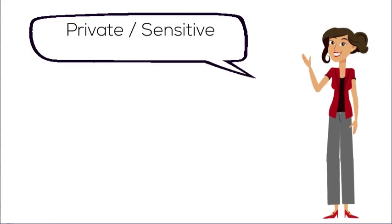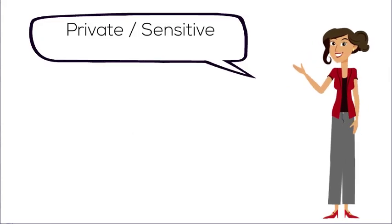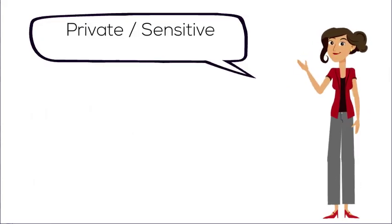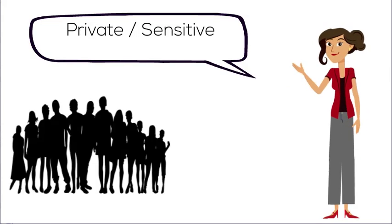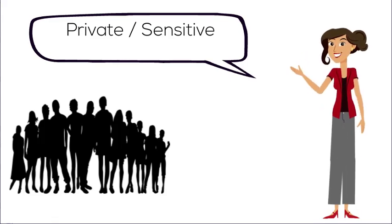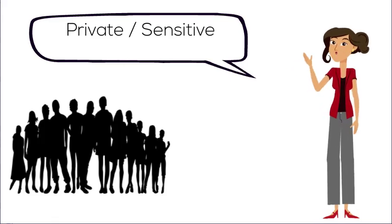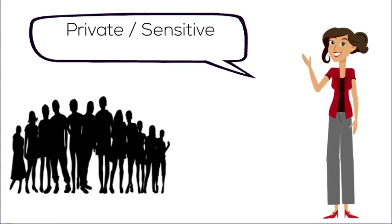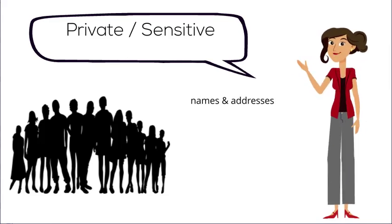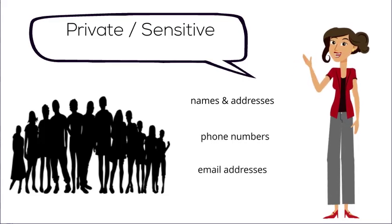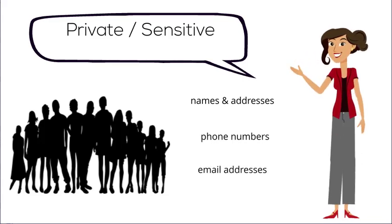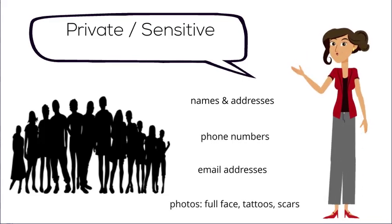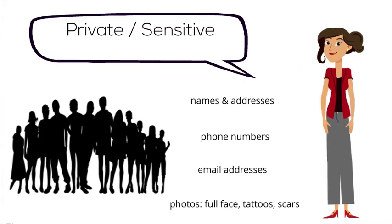What do we mean by private and/or sensitive data? Research involving humans is especially likely to involve collecting or generating private data. For example, any information that could be personally identifying is automatically considered private, such as names and addresses, phone numbers, email addresses, and/or photos showing a participant's full face, unique tattoos, or scars.